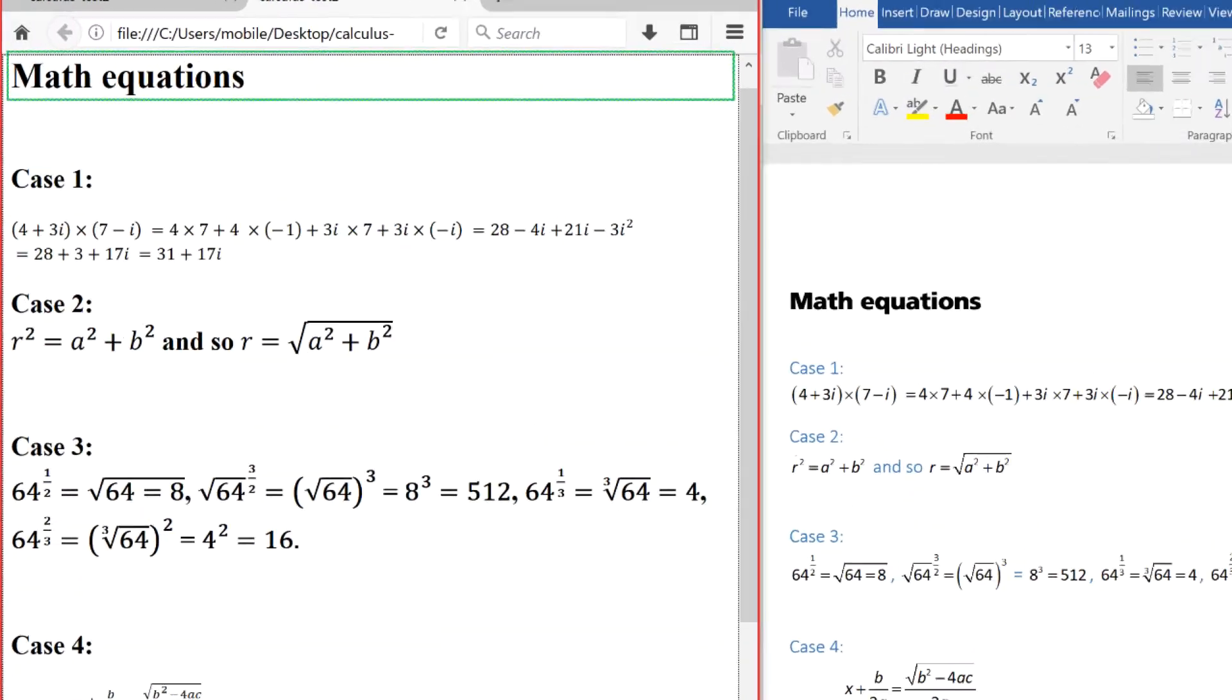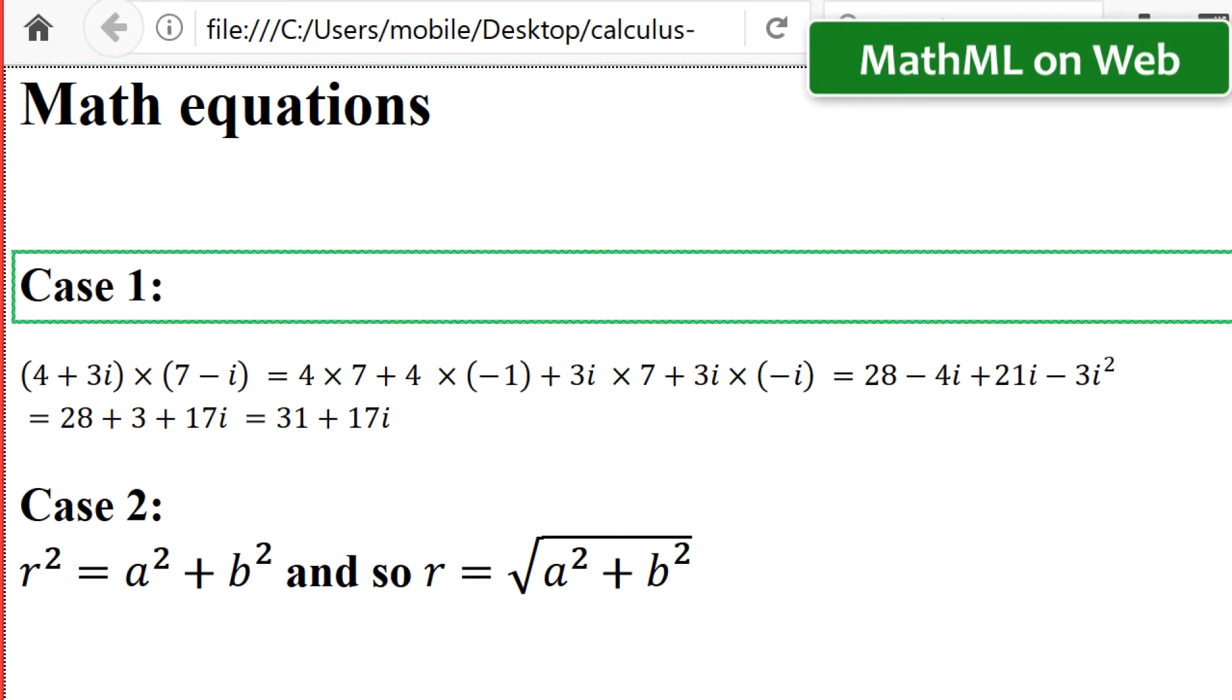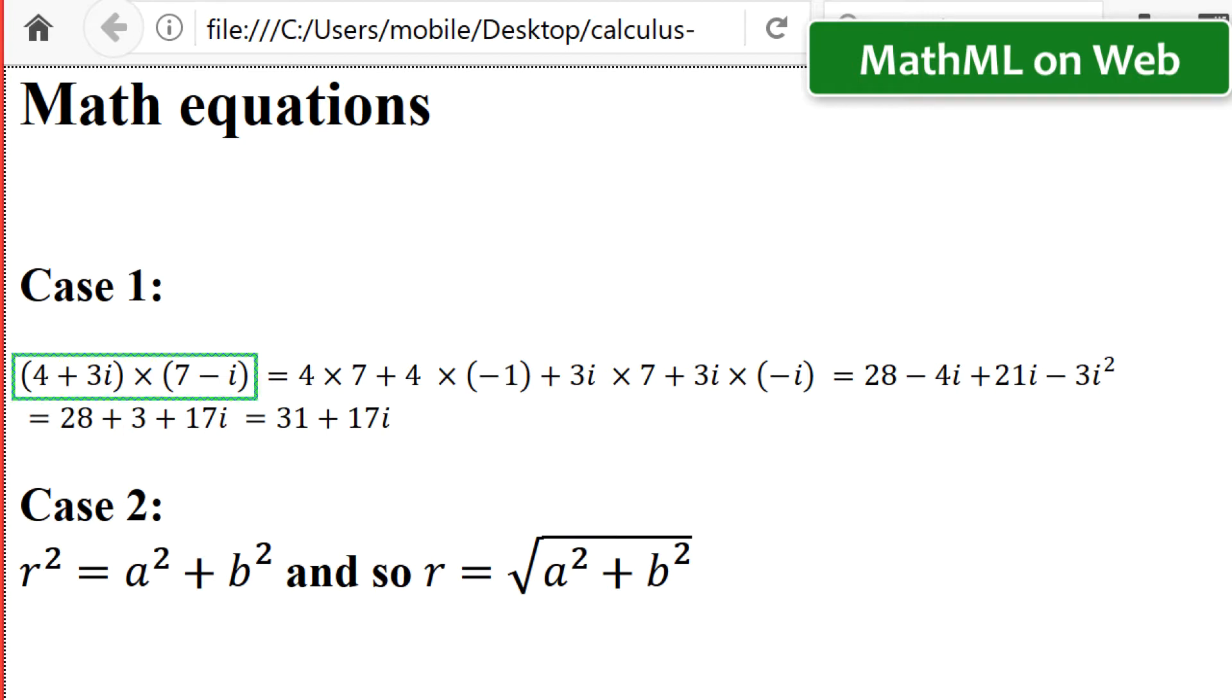These are the same exact equations as what we saw in Microsoft Word. Case 1. Heading level 2. Heading level 2. Open parent 4 plus 3i close parent times open parent 7 minus i close parent equals 4 times 7 plus 4.